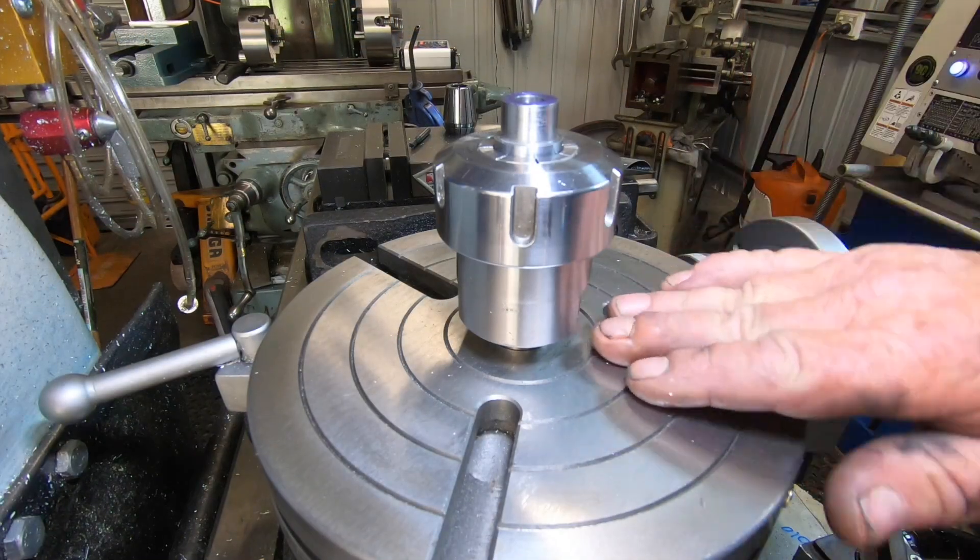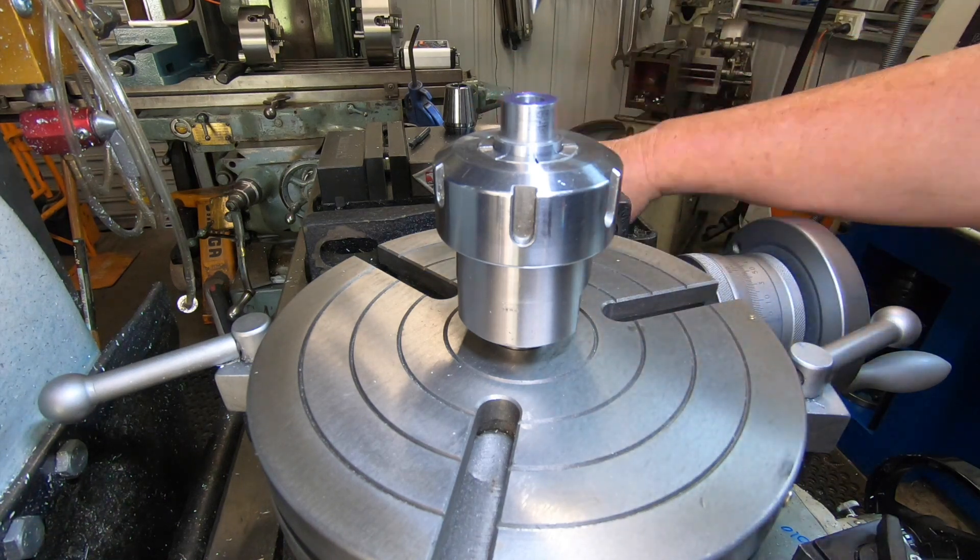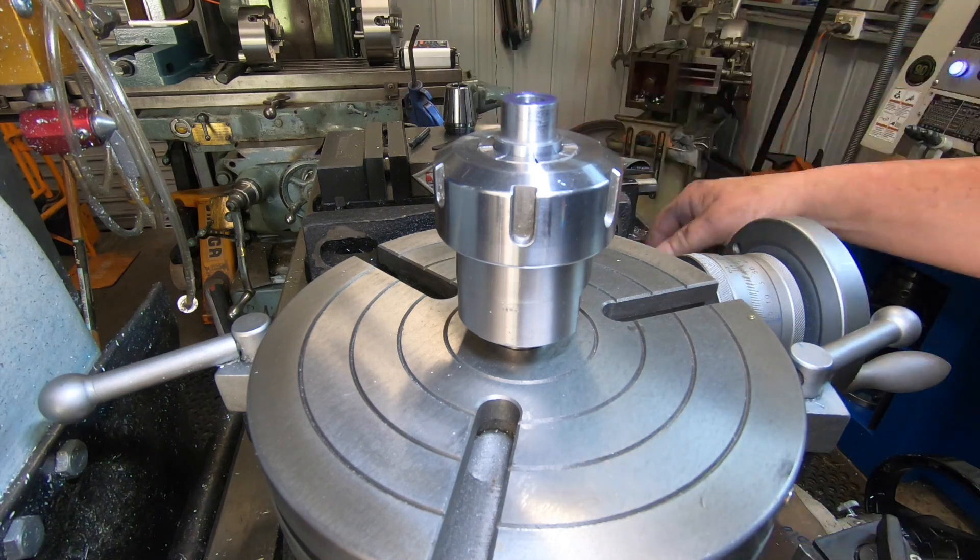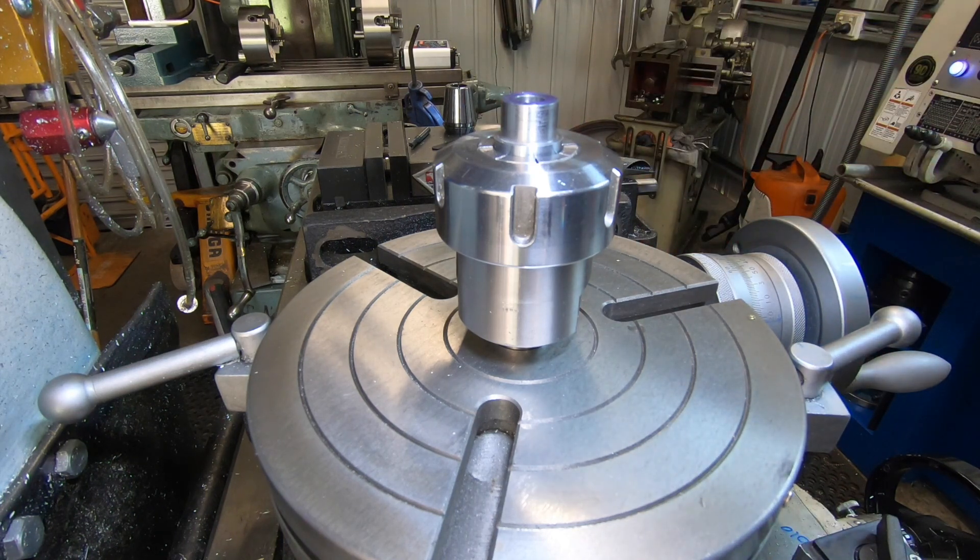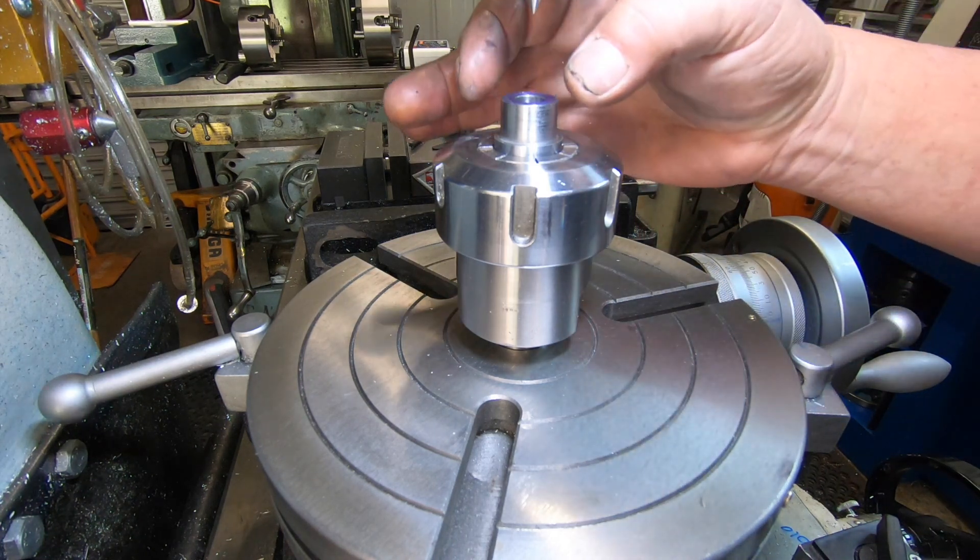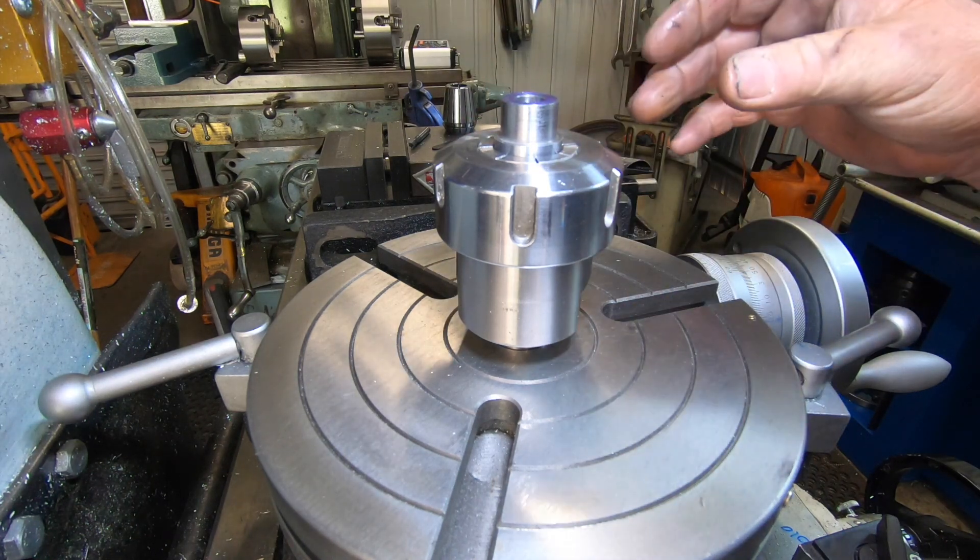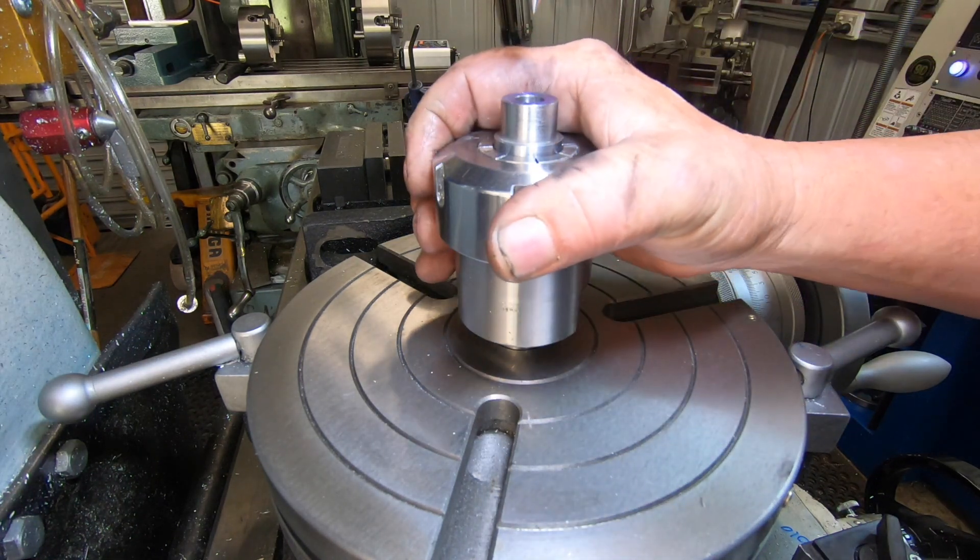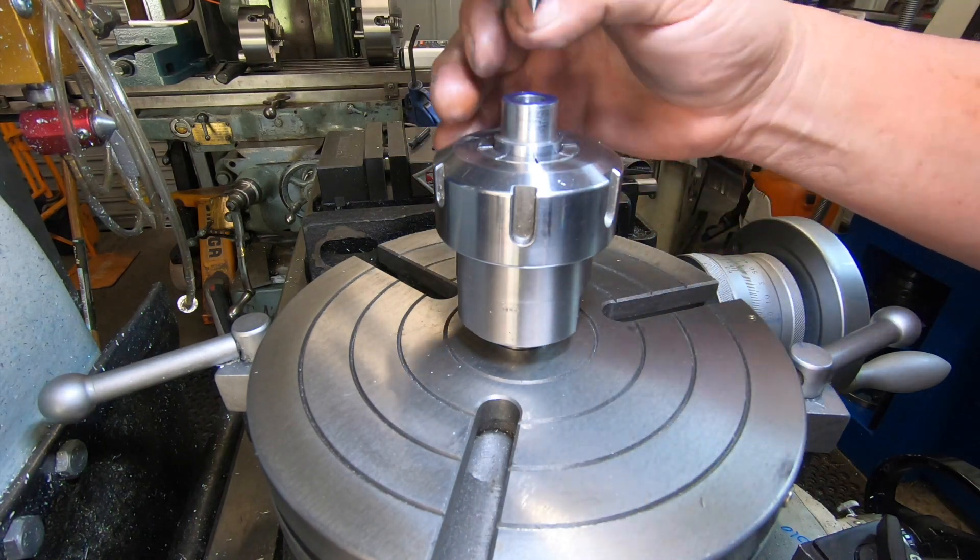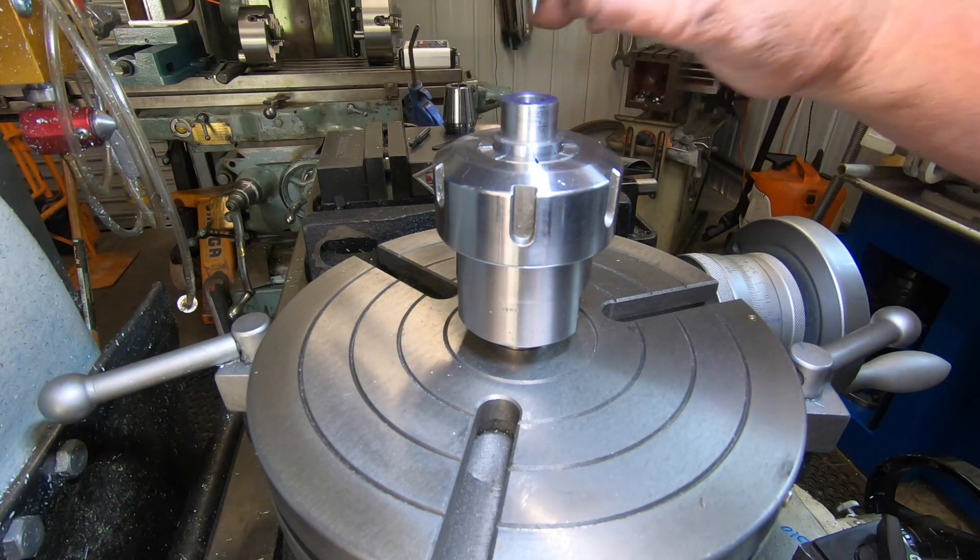I've got an ER-40 collet chuck in the rotary table. I've centered the center of the rotary table to the spindle. I've lightly clamped that in there. Now I'm going to offset 281 thou, which will put me on the edge of that outer radius.